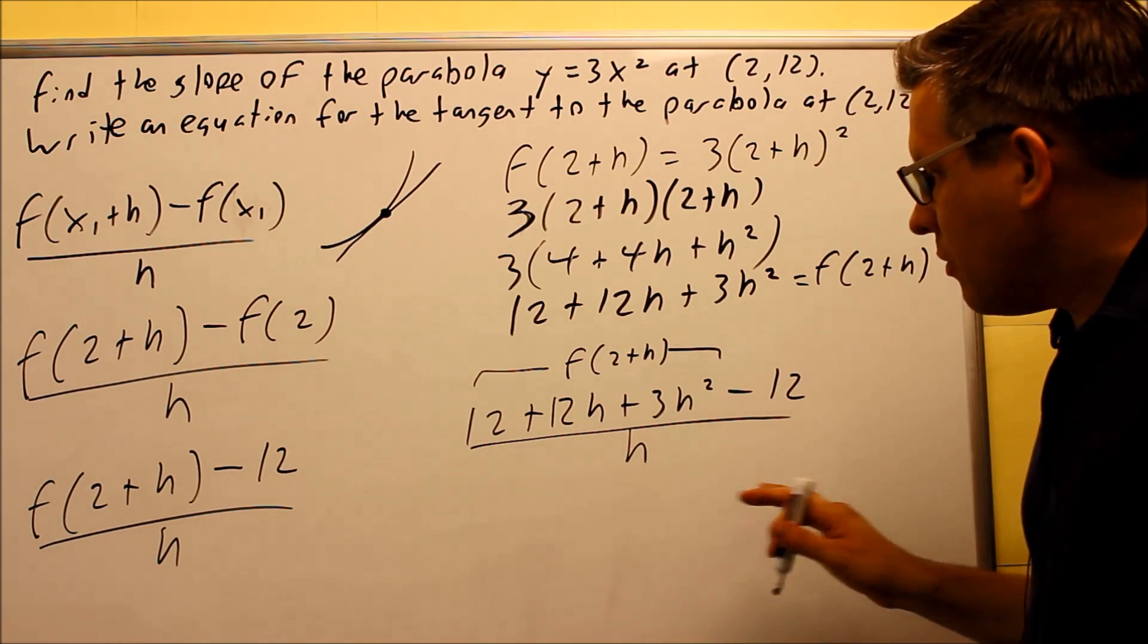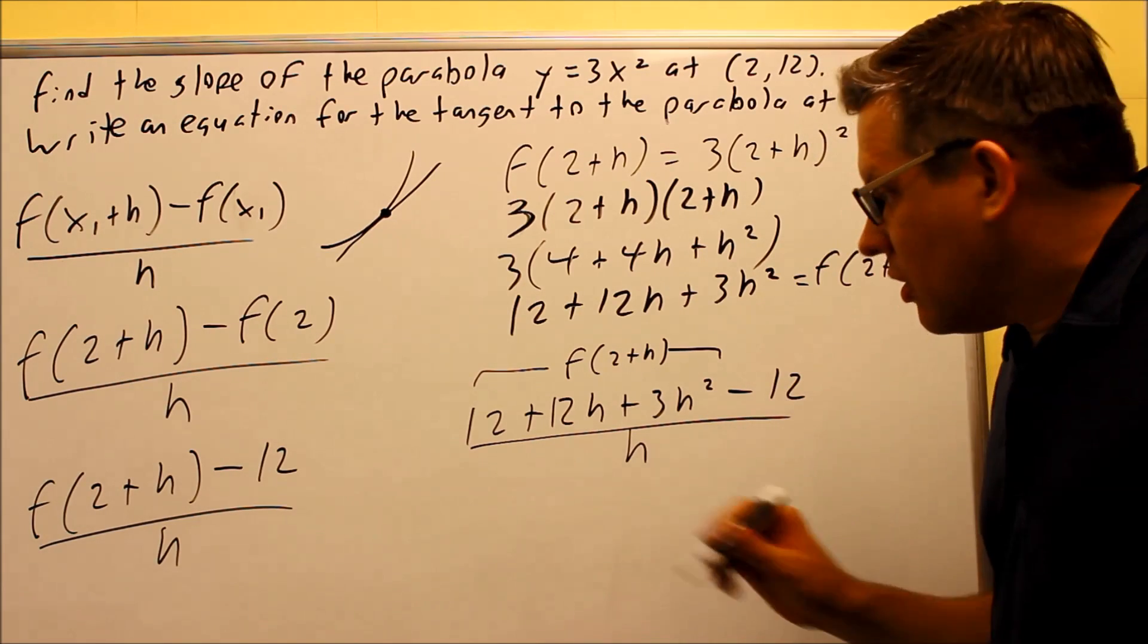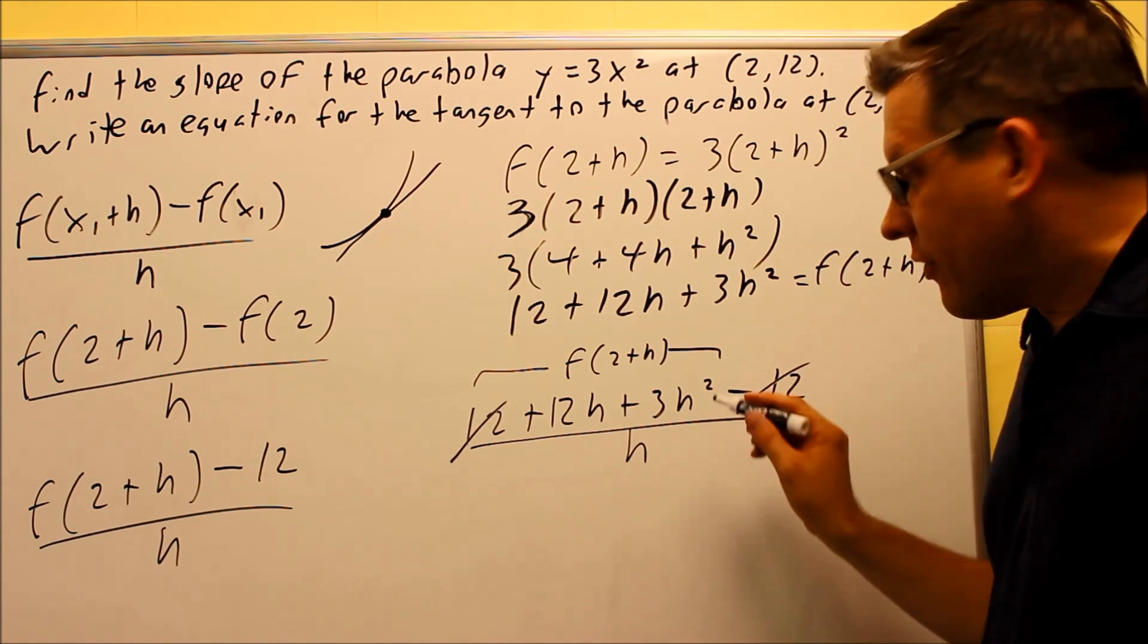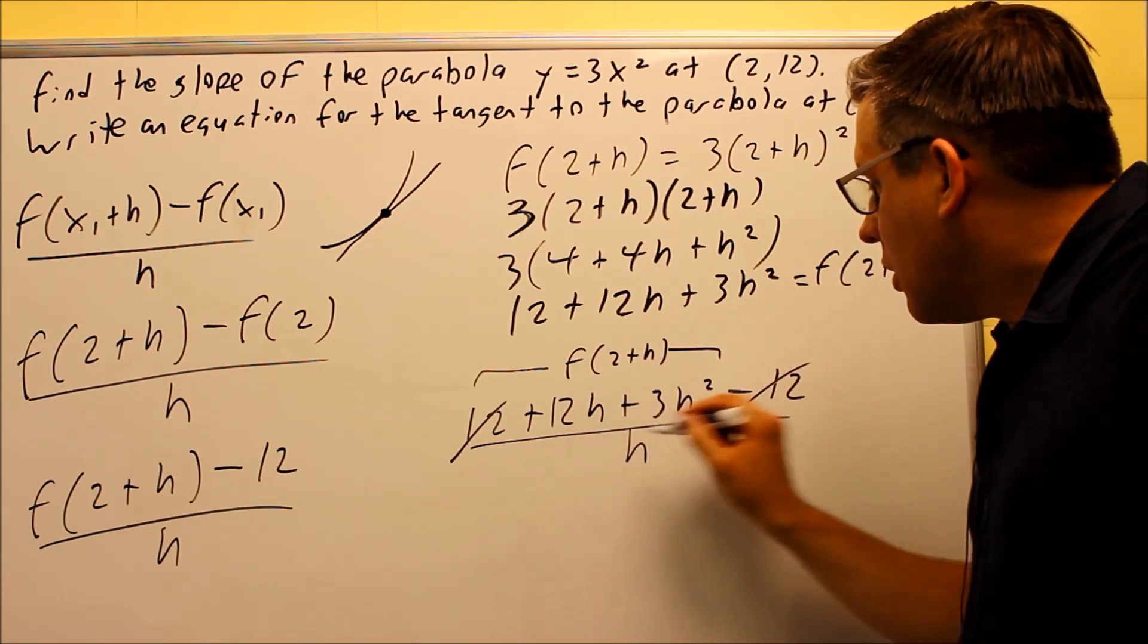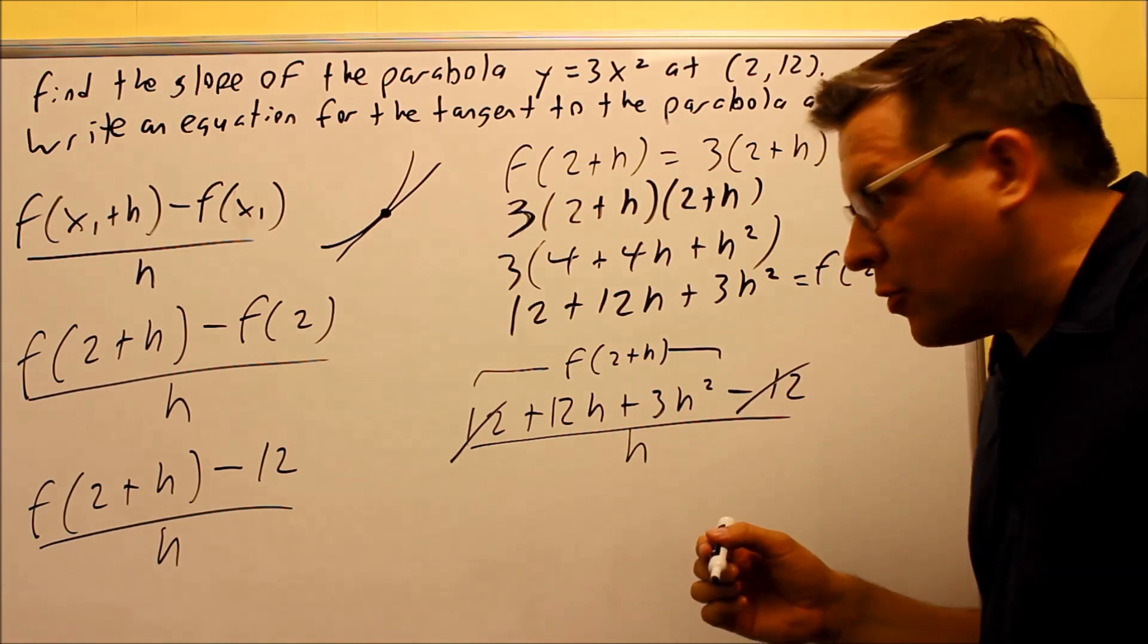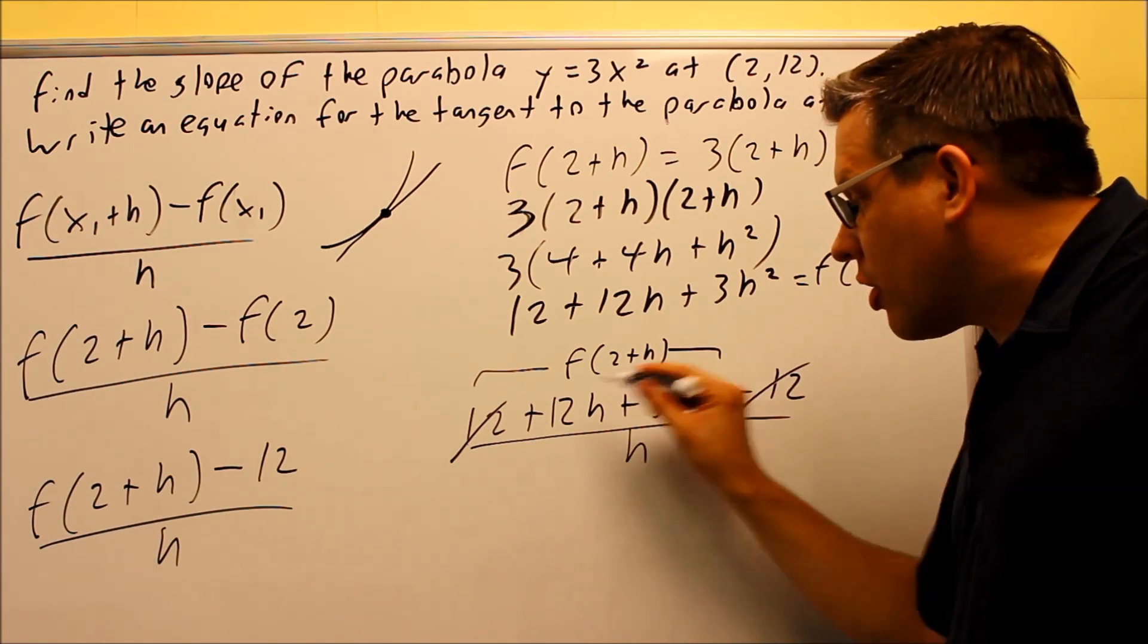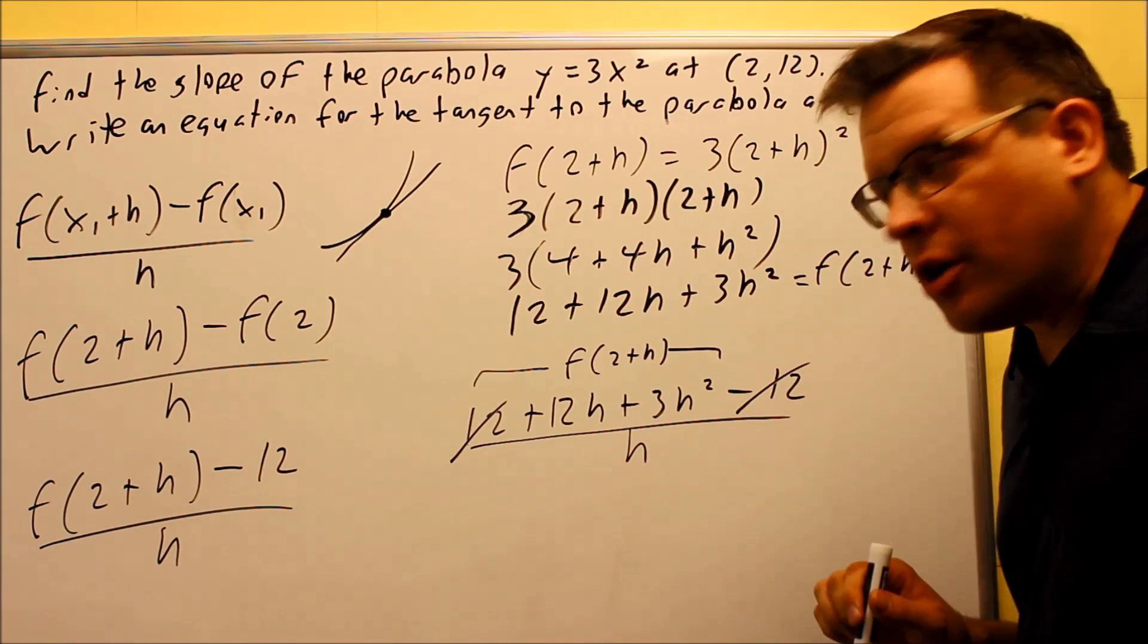Okay, what I can do next, once I put this in, you're always going to be able to get something to cancel out. So the 12s are going to cancel, and what we're left with here is things that have h in it left over. And this is always what's going to happen. You should always end up with terms that have h in it so that way you can factor out an h and cancel. And that's exactly what we want to do here.